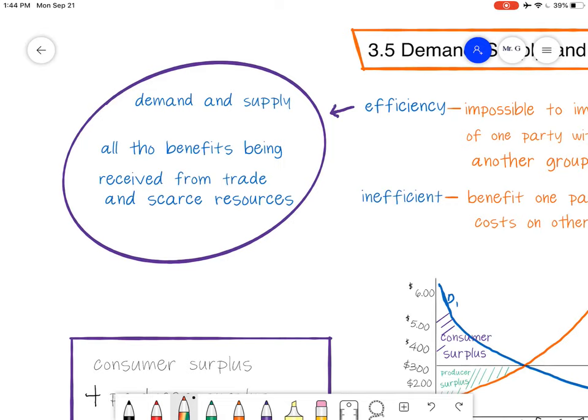So demand and supply, all the benefits being received from trade and scarce resources. When we're looking at demand and supply graphs, we are saying that this is being efficient. So when we're looking at the demand-supply model, we're basically saying that all the benefits we can receive from trade, use of scarce resources, et cetera,